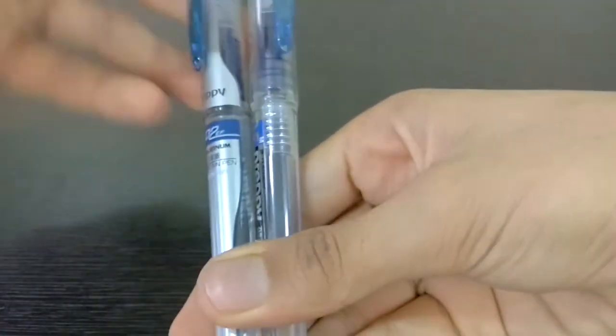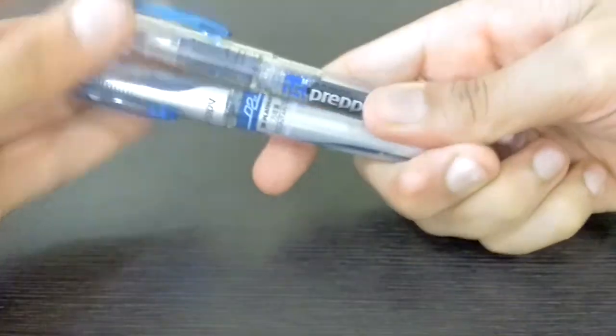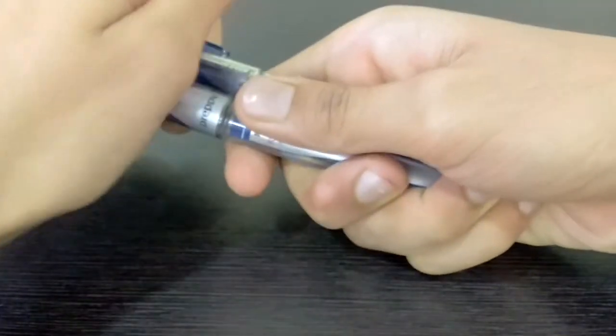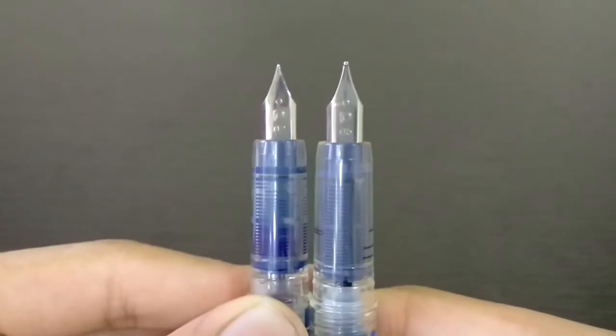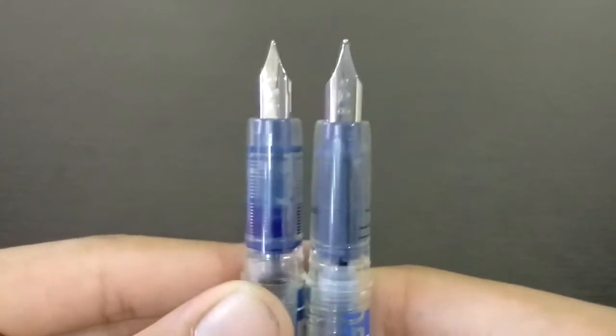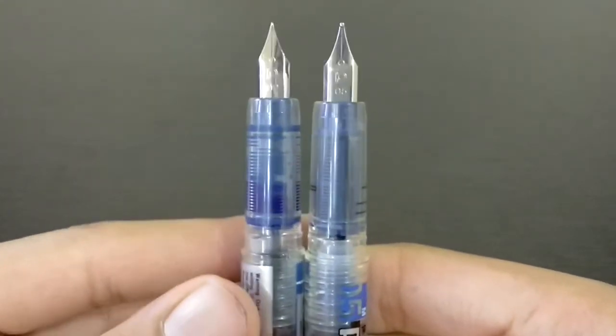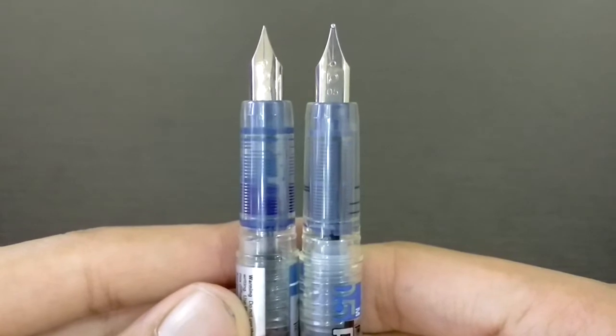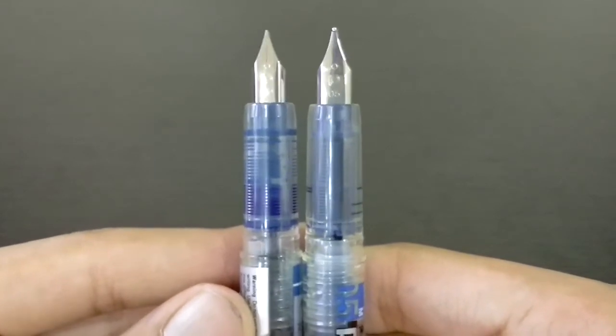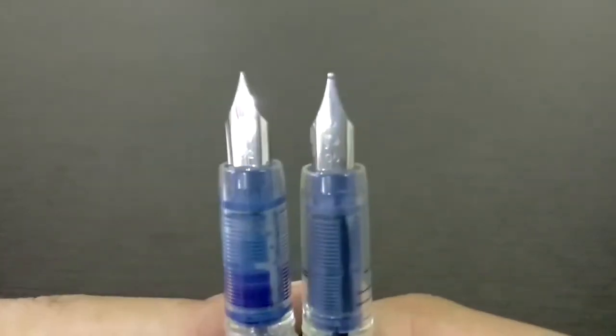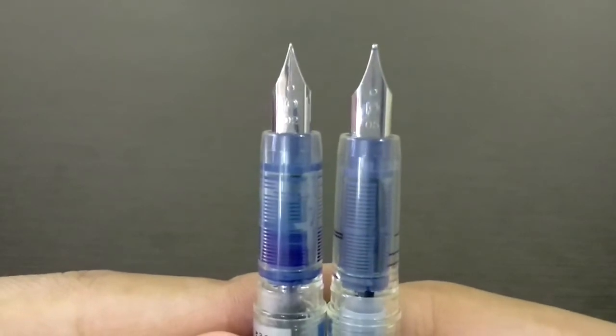You can compare these two pens and we'll just have a look at the nibs. The nibs can be compared to each other. On my left hand side I have the 02 Platinum Preppy and on my right hand side I have the 05 Platinum Preppy. You see there's a huge difference between the nib.